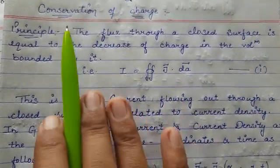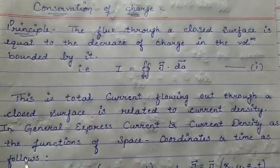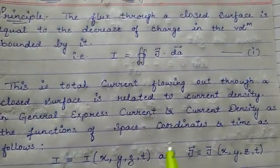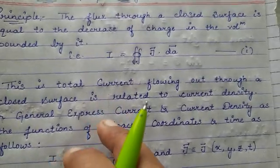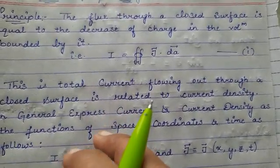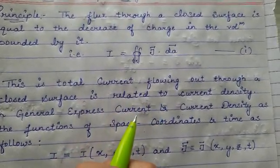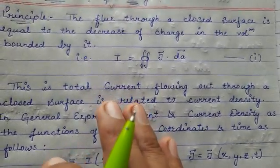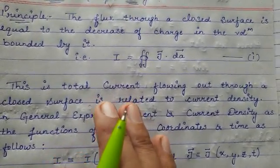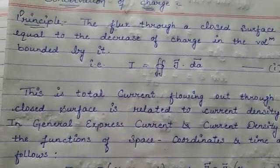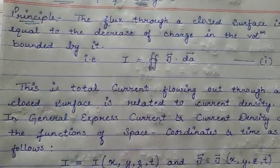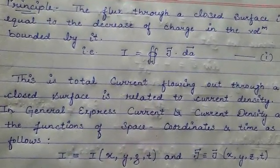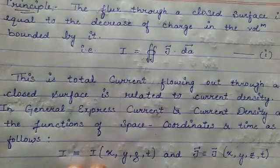We're talking about conservation of charge, and for that we consider steady current or non-steady current. For steady current, the magnitude and direction of current are the same everywhere and remain unchanged with time. But if current is not steady, both current and current density vary from point to point as well as from time to time.